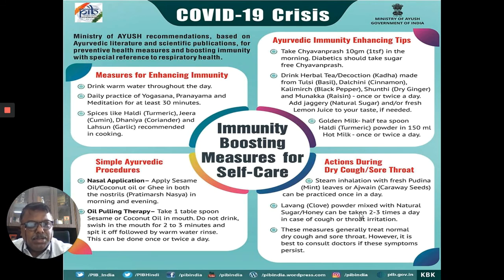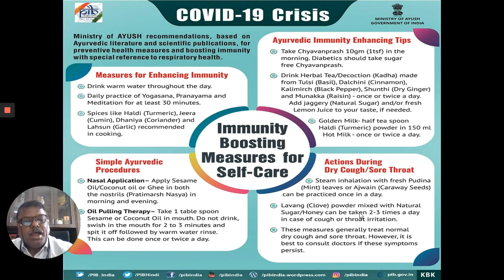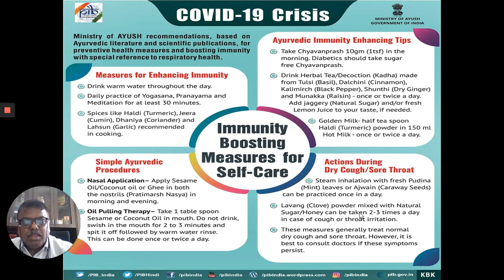Herbal teas or decoctions made from dalchini, kali mirch, shunthi (dry ginger), and resin can be taken with jaggery if needed, along with fresh lemon juice. For those with nasal blockage, allergy, or mild upper respiratory infections, steam inhalation with fresh herbs can be done, and honey can be consumed. These measures recommended by the Ministry help with dry cough and sore throat.